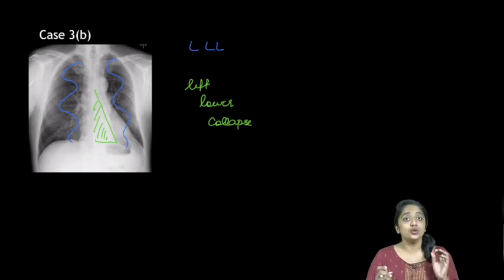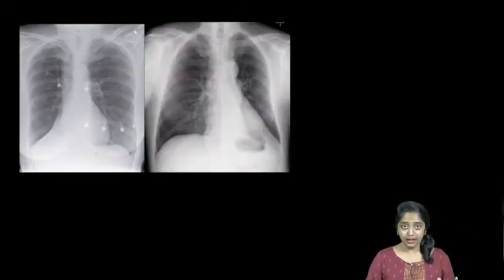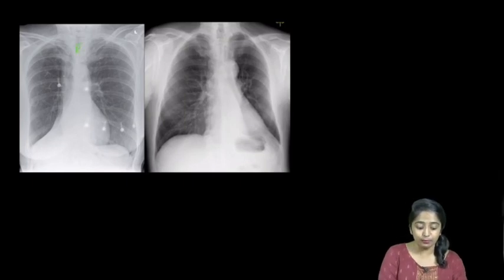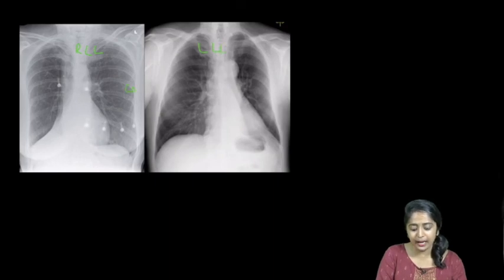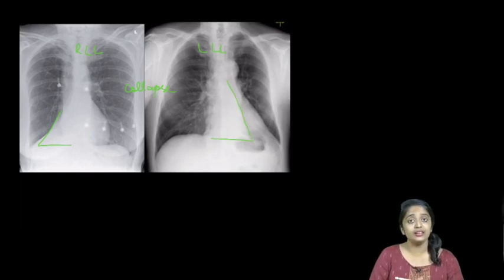So that is the importance of stepwise analysis of chest radiograph. Go by algorithm, and once you're finished, go for your review area. So retro-cardiac area is an important review area. So to summarize, this is the case of right lower lobe collapse, and this is a case of left lower lobe collapse. Keep this picture in mind, this triangular density and this retro-cardiac triangular density. I hope it's all clear about case 3 which highlights the importance of lower lobe collapse.